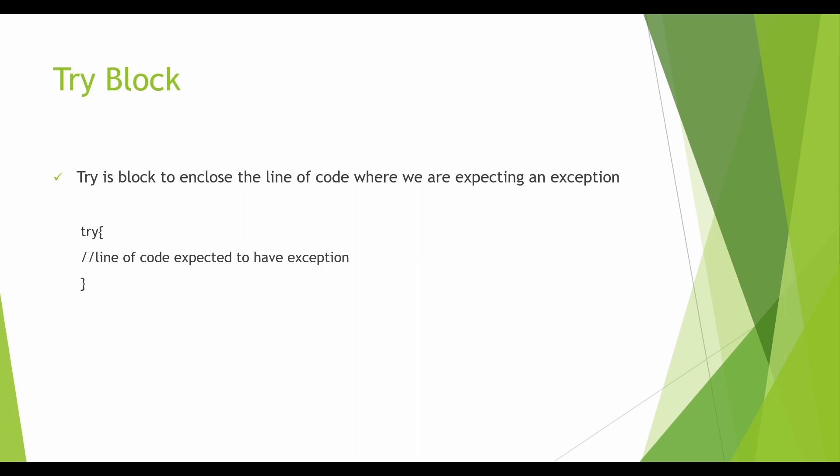Wherever we are getting an exception, or wherever we are expecting an exception, what we can do is enclose that line of code with try. As we discussed in our previous lecture, as soon as an exception occurs, an object is created of that particular exception and is handed over to the runtime system. The runtime system will then start looking for an exception handler. In this case we can enclose the exception but there is no exception handler so far.